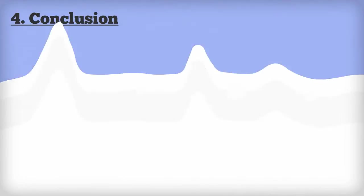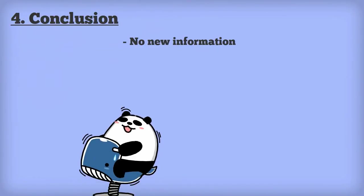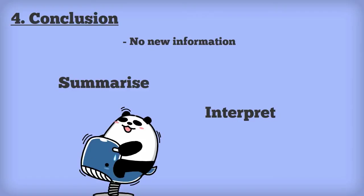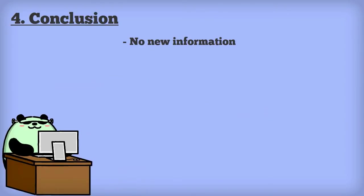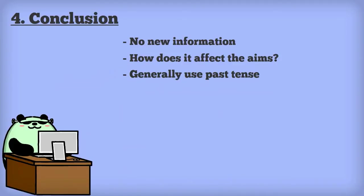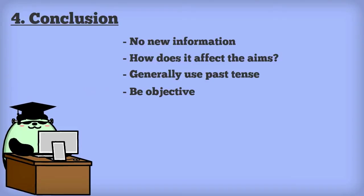Remember, we don't put any new information in the conclusion. We're just summarising and interpreting the information we already have. We need to show how the information we've presented affects the aims from our introduction. Generally, in the conclusion, we use past tense to summarise the findings. But you can use present tense or the present perfect if you think that the findings are still true now.